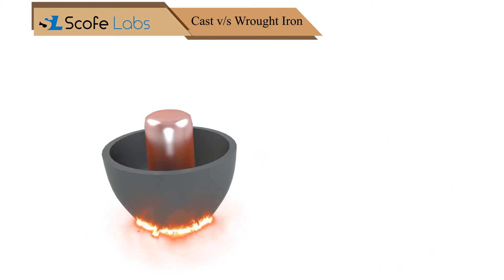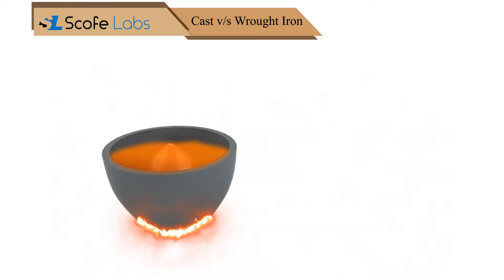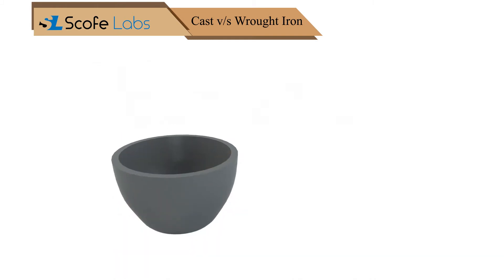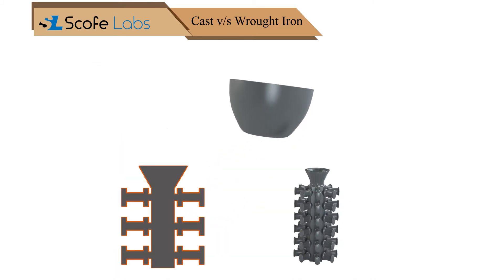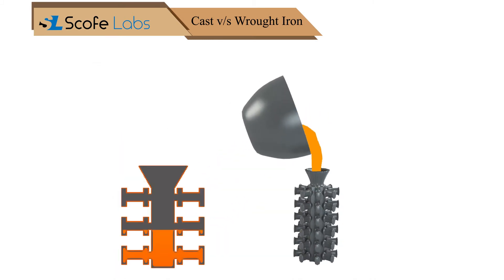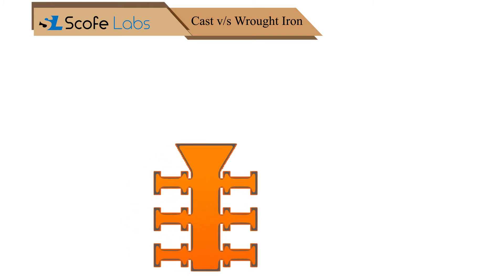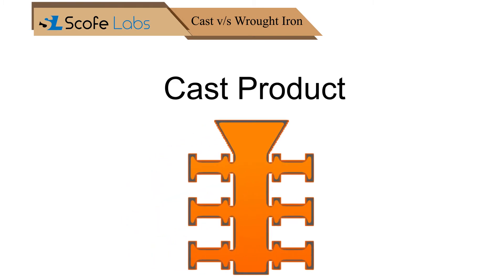As the name suggests, a cast product can be defined as the product obtained by the process in which molten material is poured into a mold of desired shape and then allowed to solidify.